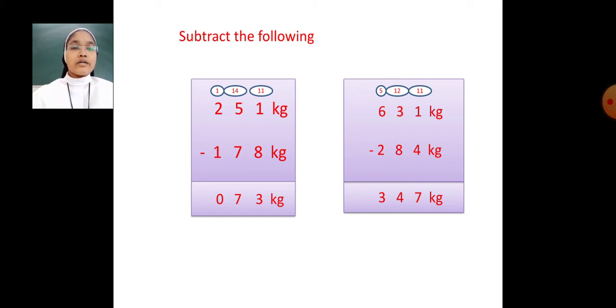Next. 631 kilogram minus 284 kilogram. Here also we cannot subtract 4 from 1. So what we have to do? We have to borrow from the tens place. It will become 11. 11 minus 4 is 7. Now in the tens place, remaining 2. We cannot subtract 8 from 2. So what we have to do? We have to borrow from the hundreds place. It will become 12. 12 minus 8 is 4.